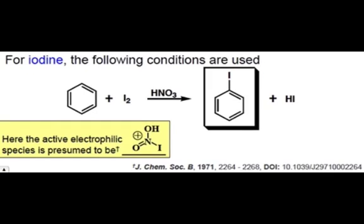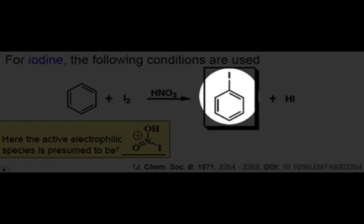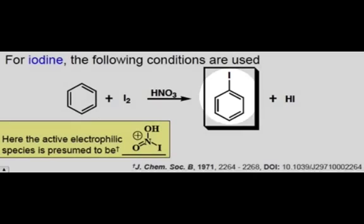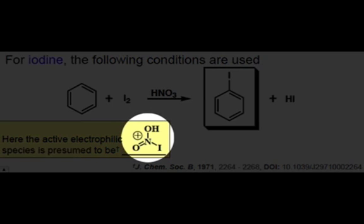Iodination of a benzene ring can also be achieved by treating iodine with an oxidizing agent such as nitric acid. The key electrophile that is thought to react with benzene is shown here.